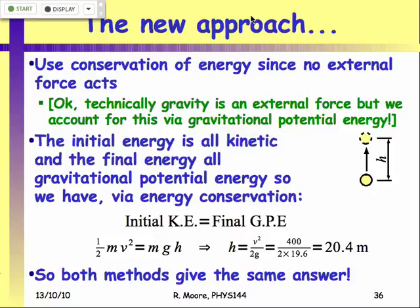The mass of the object cancels out — it's irrelevant to this problem because both the kinetic and the gravitational potential energy are proportional to mass. So we end up with a result that's exactly the same as we got from our basic kinematics. That's a new way to do problems.